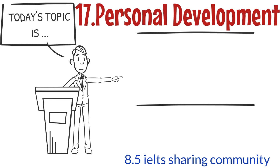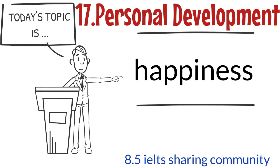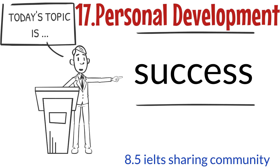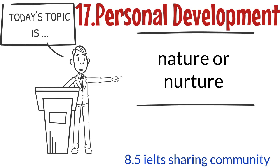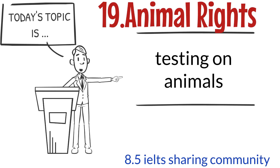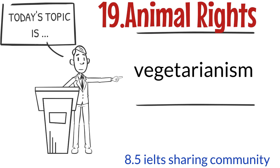Topic 17: Personal Development. Topics 18 and 19 cover Happiness, Success, and Nature or Nurture. Topic 19: Animal Rights, Vegetarianism, and Zoos.